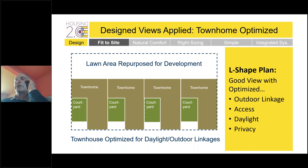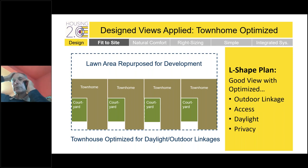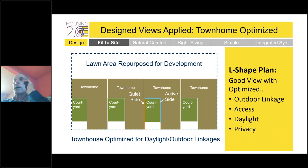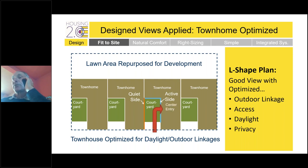An L-shaped panel design solves many of these challenges. We can repurpose yards that are no longer used and have an equivalent number of units — in this case going from six to four units, then using the extra space freed from backyards to fit the additional units back in. Now we have good views plus optimized outdoor linkage, access, daylight, and privacy. On the side facing the courtyard neighbor, there are no windows — that's the quiet side, giving privacy. You get a huge floor plan exposure to the courtyard, optimum outdoor linkage, access, daylight, and the center entry gives a full room up front and a full front porch.